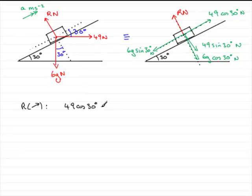And it's going to be 6g sin 30 degrees. So it opposes this direction. So it's minus 6g sin 30 degrees.